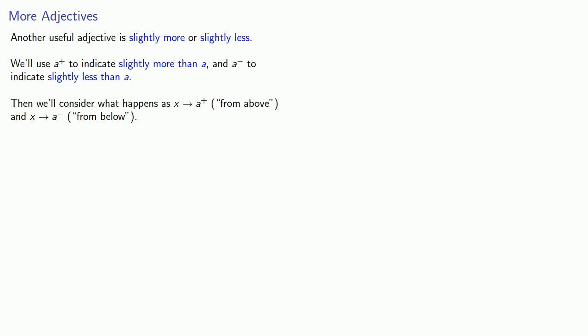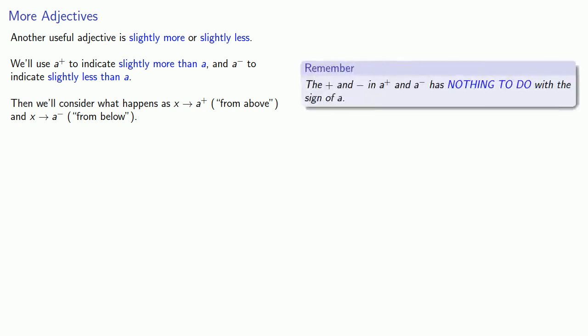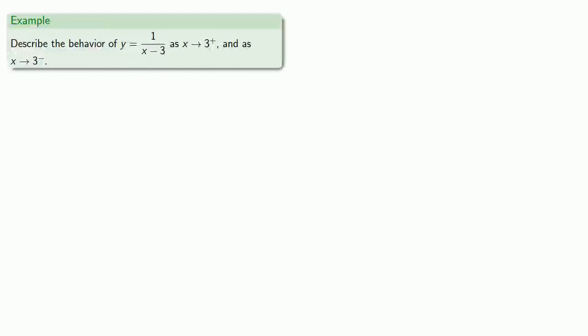One very important thing to remember: the plus and minus in our notation has nothing to do with the sign of a. Now let's try to describe the behavior of y equals 1 over x minus 3, as x goes to 3 but stays slightly more than 3, and as x goes to 3 but stays slightly less than 3.